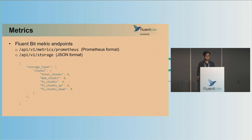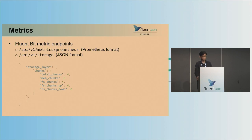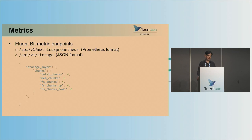Let's talk about FluentBit metrics. The HTTP server on FluentBit exposes multiple endpoints. Two of them we'll discuss: the metrics endpoint in Prometheus format, which exposes metrics for each running plugin, and the storage endpoint, which exposes storage information in JSON format.